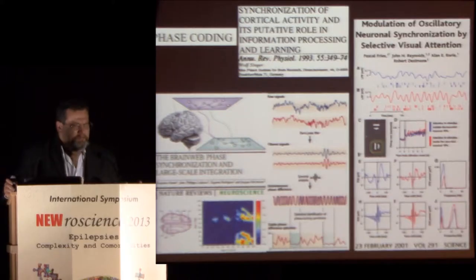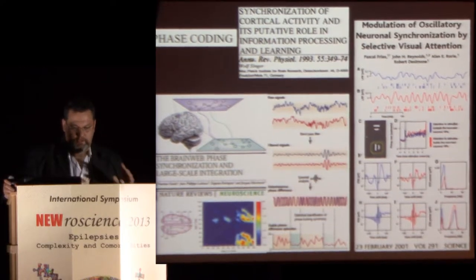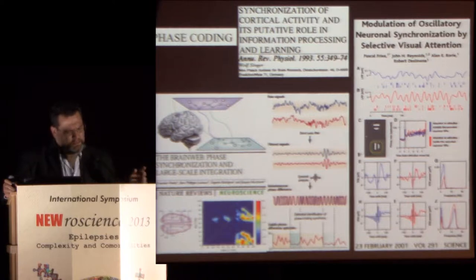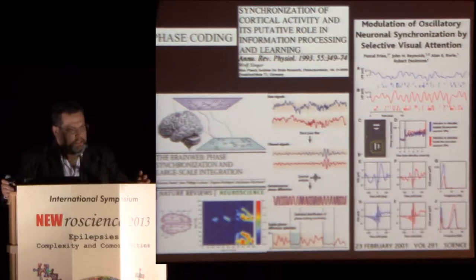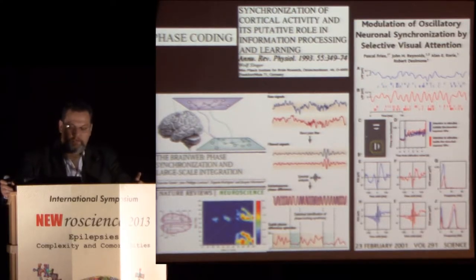Around the 90s — actually a little before that — a concept of phase encoding came to be, described in a review article by Zinger. This concept showed that you could have endogenous oscillators like gamma oscillations, and specific neurons would synchronize to these endogenous oscillators to encode information.